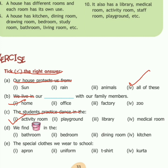Part D: we find a bucket in the bathroom, bedroom, dining room, or kitchen? We want a bucket for bathing, so we find a bucket in the bathroom. Part E: the special clothes that we wear to school — apron, uniform, t-shirt, or kurta? We wear uniform to school, so uniform is the correct answer.